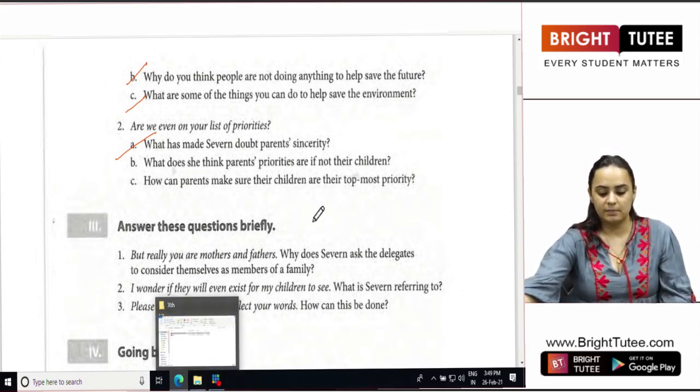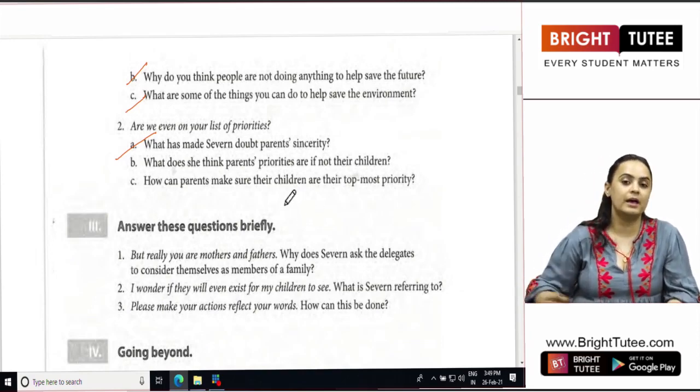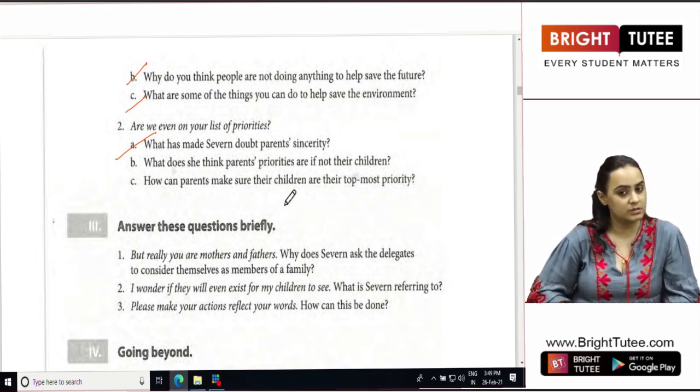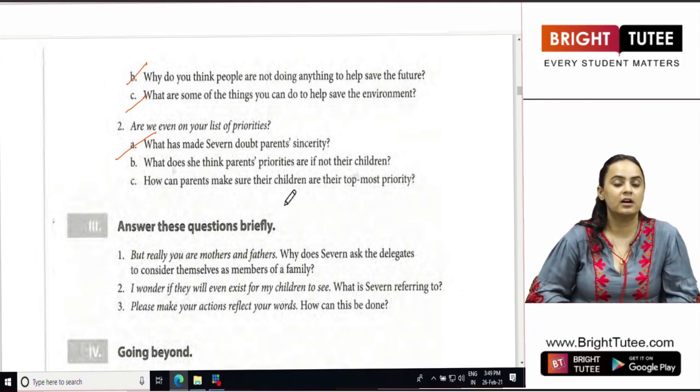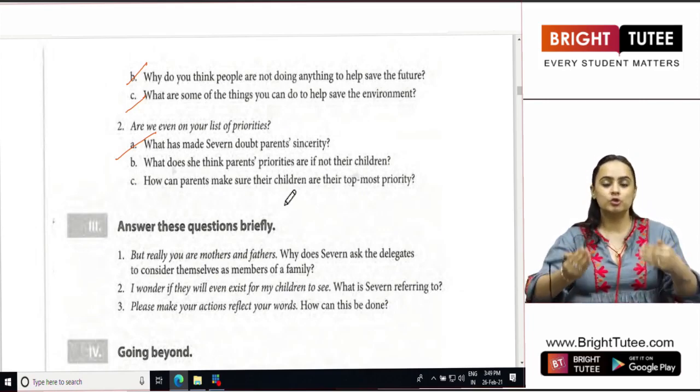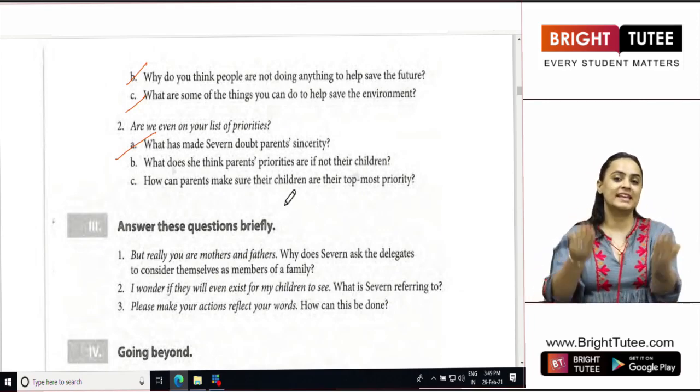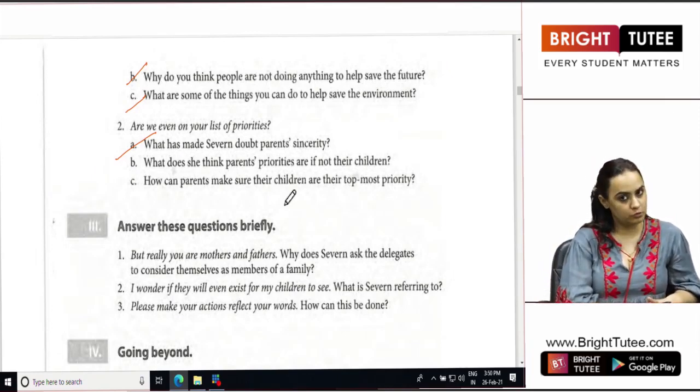What does she think parents' priorities are if not their children? So if the children are not the priority of the parents, then according to Severn, what are the parents' priorities? The parents' priorities are to look after themselves, to look after what they have in the present, to earn and to get as much as they can without thinking of what they will leave for the future generation.